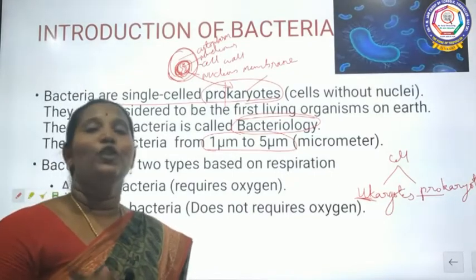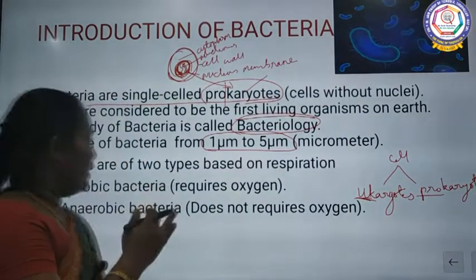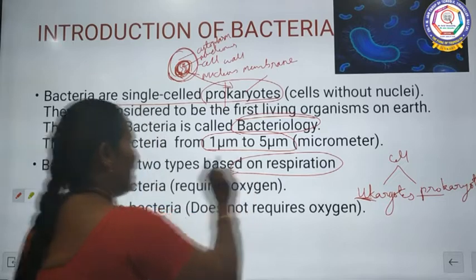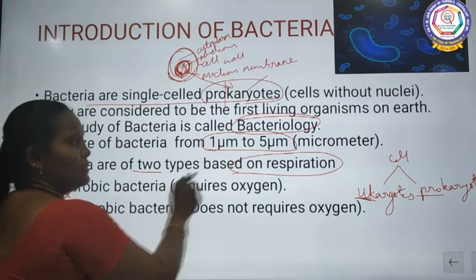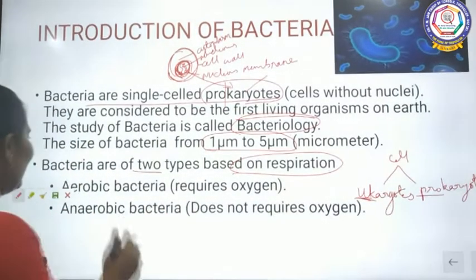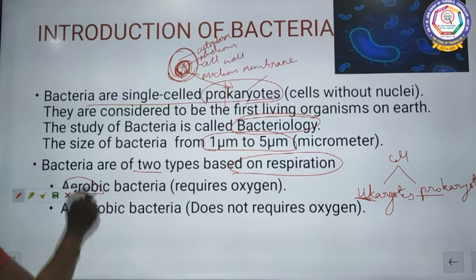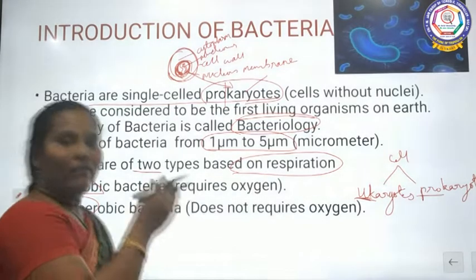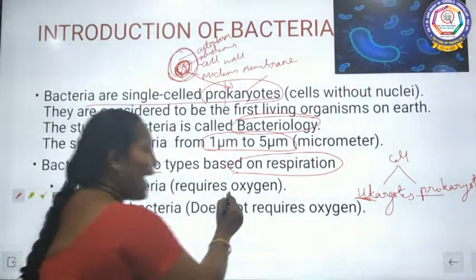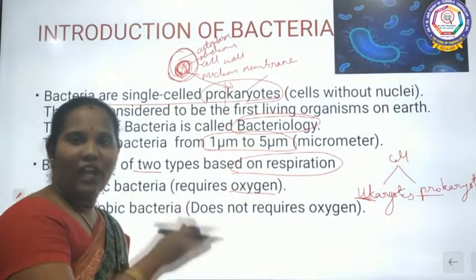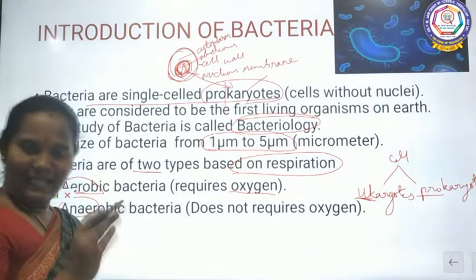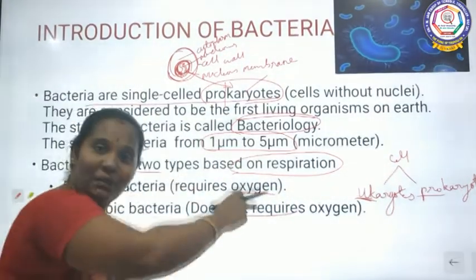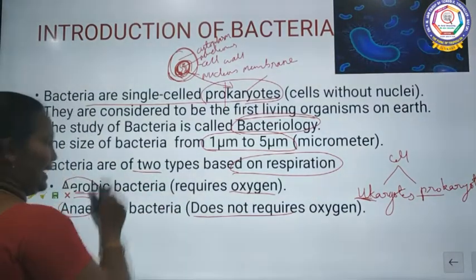Bacteria can be classified into two types based on their respiration. One is aerobic bacteria and the other is anaerobic bacteria. Aerobic bacteria are bacteria that require oxygen for their respiration. Anaerobic bacteria do not require oxygen for their respiration.